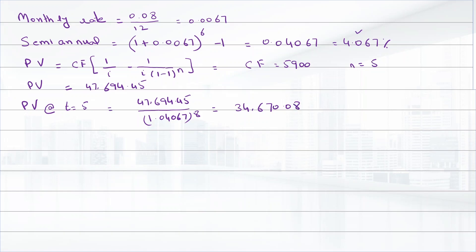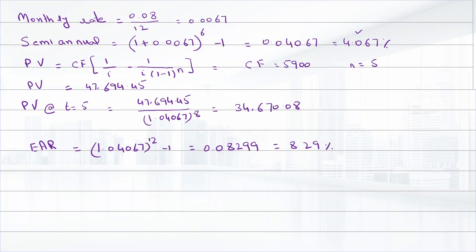We can also calculate this present value using the number of years by using the EAR (effective annual rate). The EAR is (1.04067) raised to the power of 12, minus 1 — that is 0.08299, or 8.29 percent.